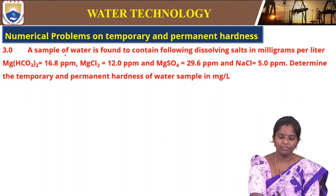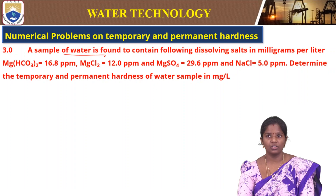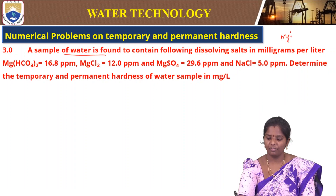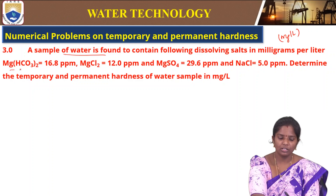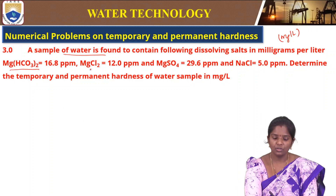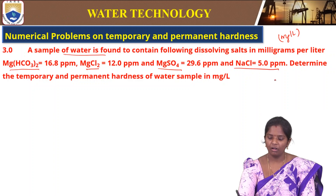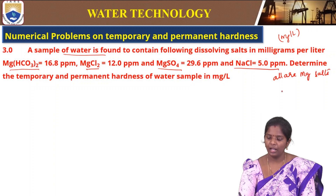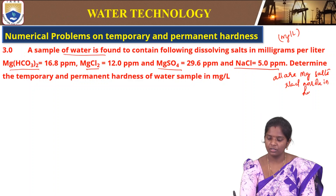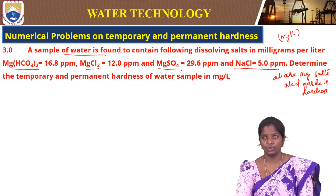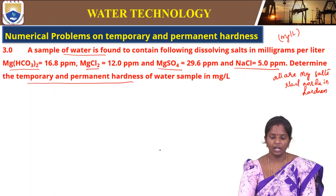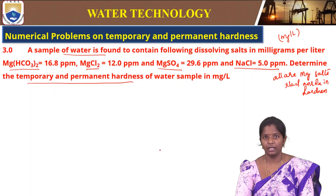A sample of water is found to contain dissolved salts in mg per liter: magnesium bicarbonate 16.8 ppm, magnesium chloride 12 ppm, magnesium sulphate 29.6 ppm, and sodium chloride 5 ppm. Here all are magnesium salts — sodium salt does not play any role in hardness, so sodium salt will not contribute to any hardness. Determine the temporary and permanent hardness in mg per liter.